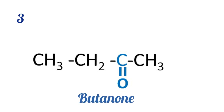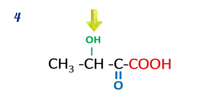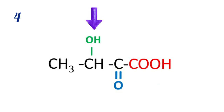Now let's consider a scenario where we have all the functional groups mentioned earlier in one compound — that is, we have a carboxylic acid group, an -OH group, and a carbonyl group, specifically a ketone. How would you classify this type of organic compound? What then would be the parent name?